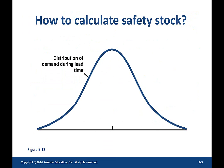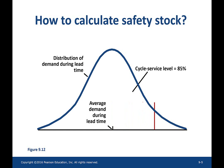Variability of the demand is measured by the distribution of demand during the lead time, and this is the average demand during the lead time. If the buyer carries inventory equal to the average demand during the lead time, the buyer can satisfy only 50% of the demand that happens during the lead time. The rest 50% will be lost, which is clearly bad for the business. Now if the buyer wants to satisfy 85% of the demand during the lead time, then on-hand inventory needs to be increased. This 85% is called service level.